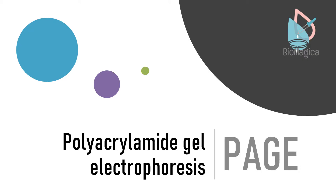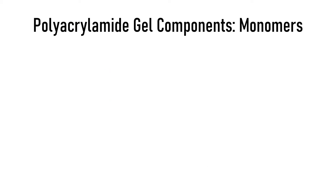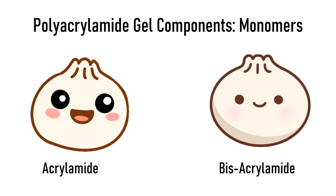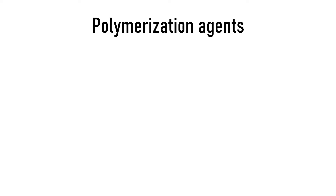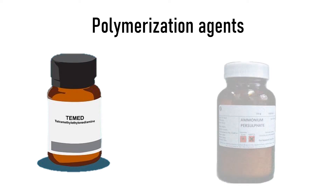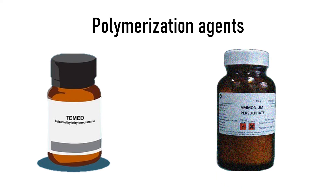In this video, we will learn about polyacrylamide gel electrophoresis. A polyacrylamide gel is made up of acrylamide and bisacrylamide monomers which are polymerized to make the gel matrix. The polymerization of these monomers is done using TEMED and ammonium persulfate.